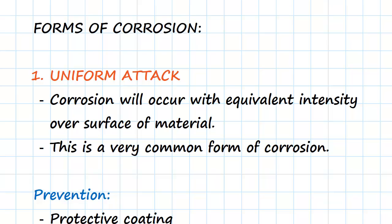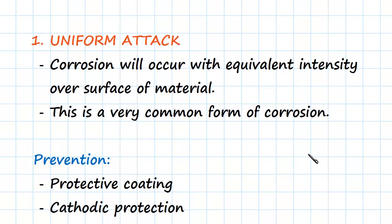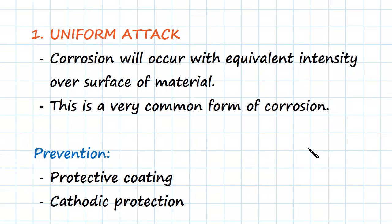So the prevention of any kind of uniform attack or corrosion in general, well this is going to be either applying a protective coating. So for example, galvanizing steel, so galvanized steel when we apply a zinc coating. Or it could be an element which has a passivating layer, so it forms a protective oxide layer.